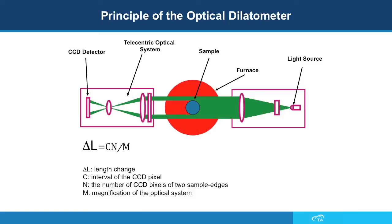The light emitted from the source goes through a diffusion unit and a lens that produces a uniform short wavelength plane of light. The sample blocks the light and the shadowed light goes through a telecentric optical system. The width of the shadow is detected by the edge detector. The change in length is calculated by multiplying the interval of the CCD pixel by the number of CCD pixels of the two sample edges, dividing it by the magnification of the optical system.